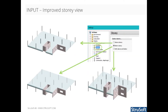The story view has also been improved. The first change is the settings for stories. Here you can choose which objects should be displayed at story view — it can be all objects above story, below story, or both above and below.